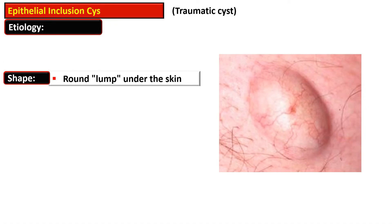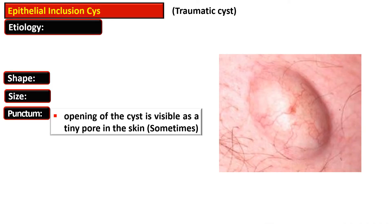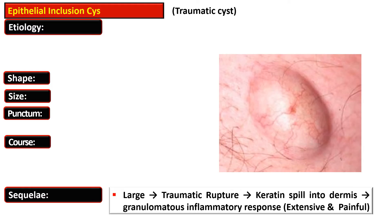They are round lumps present under the skin. The size of these epidermal inclusion cysts varies from a small pea to the size of a tennis ball. A punctum is present — this punctum is the opening of the cyst and appears as a tiny pore in the skin. Sometimes it may get gradually larger with time and does not disappear spontaneously.